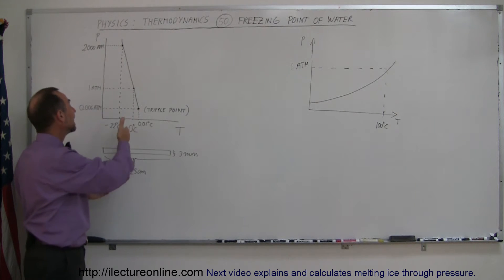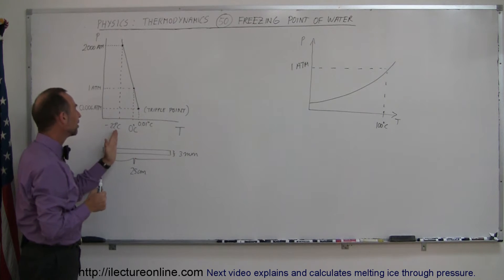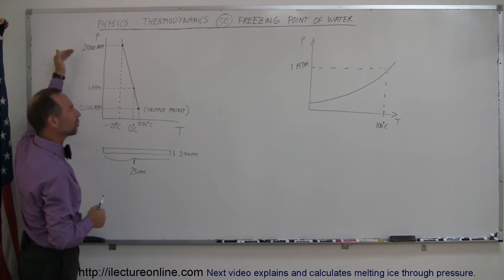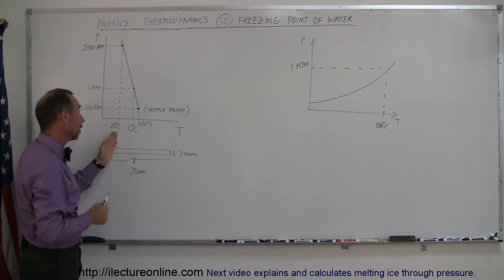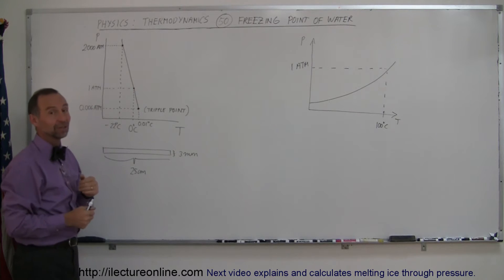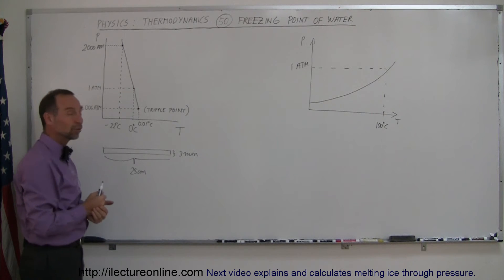And likewise, if we then increase the atmospheric pressure, you can see that water will begin to freeze at even colder temperatures. For example, if the pressure is increased to 2,000 atmospheres, which is of course a great amount of pressure, water will not begin to freeze until it reaches minus 22 degrees centigrade, so there is obviously an effect.